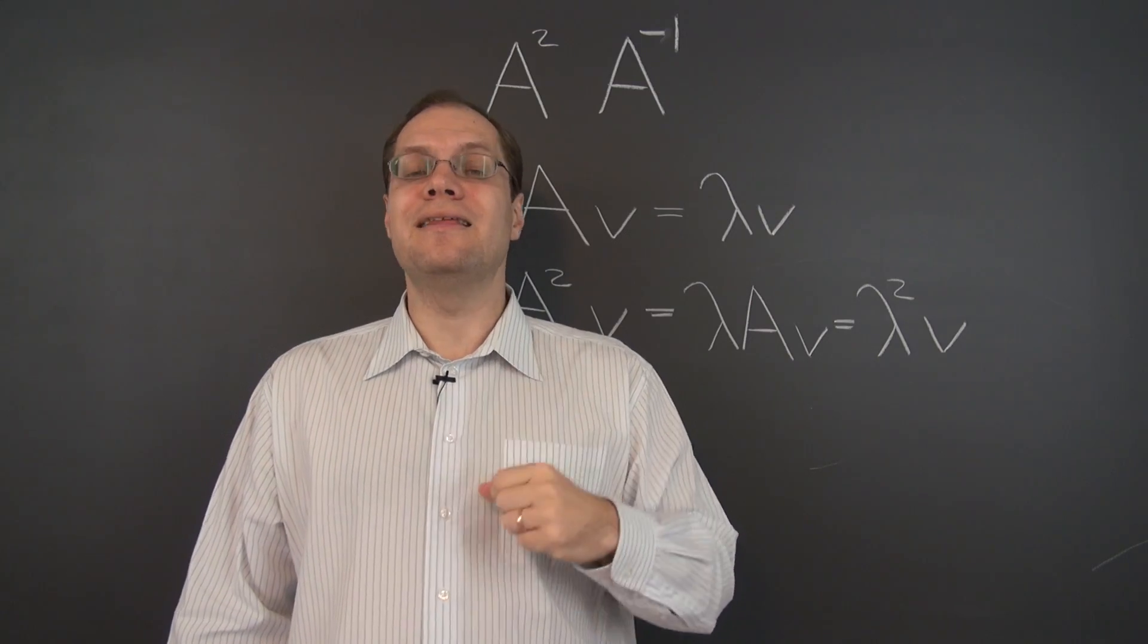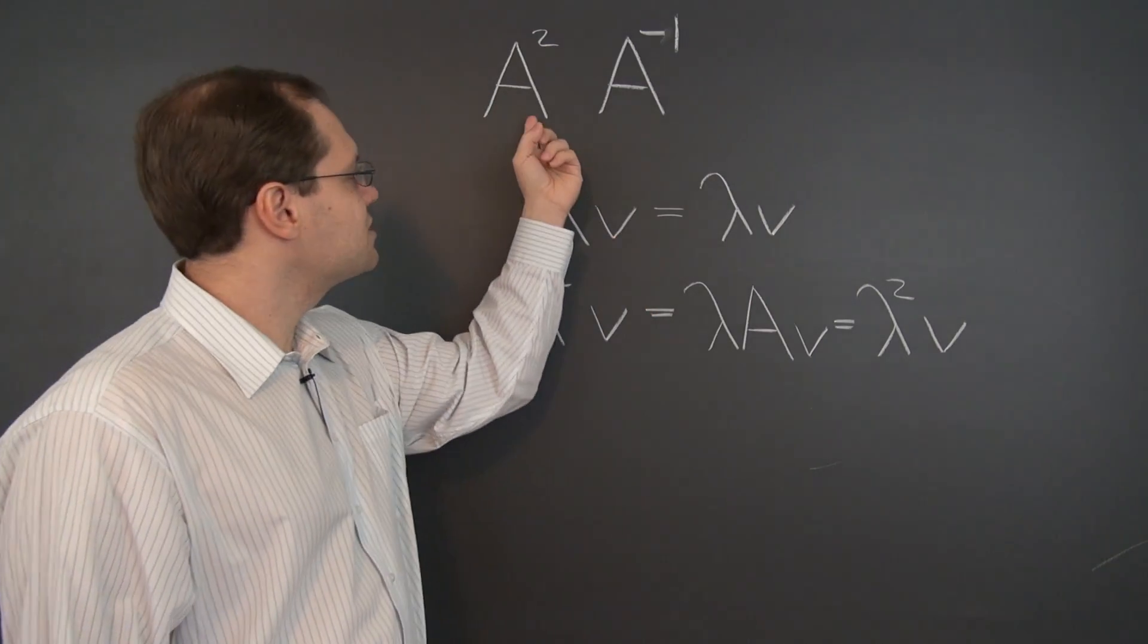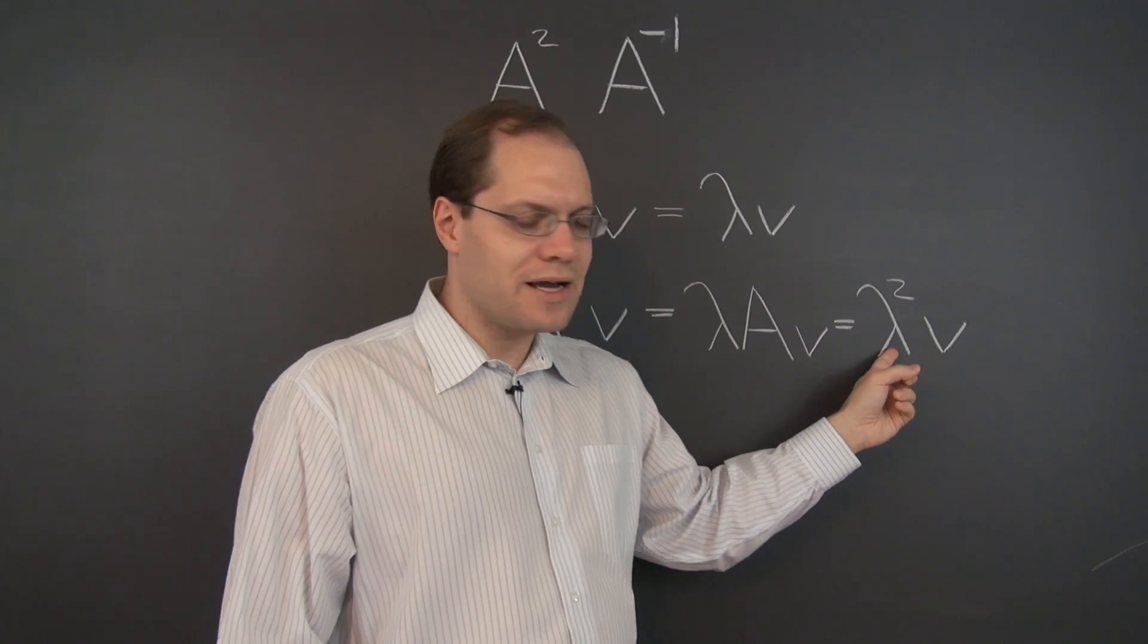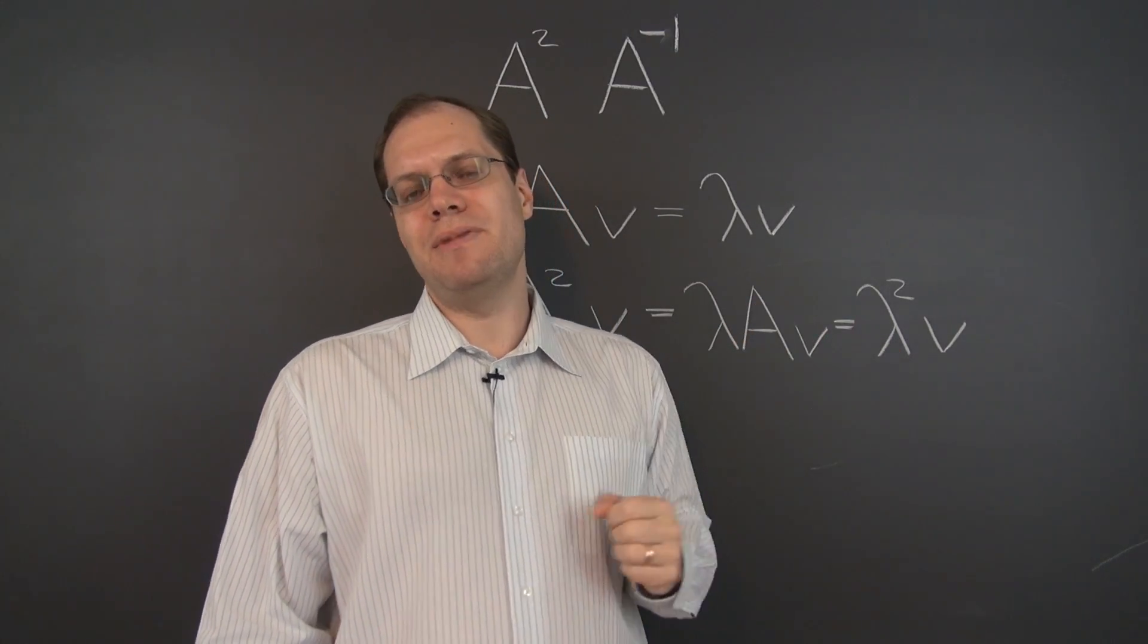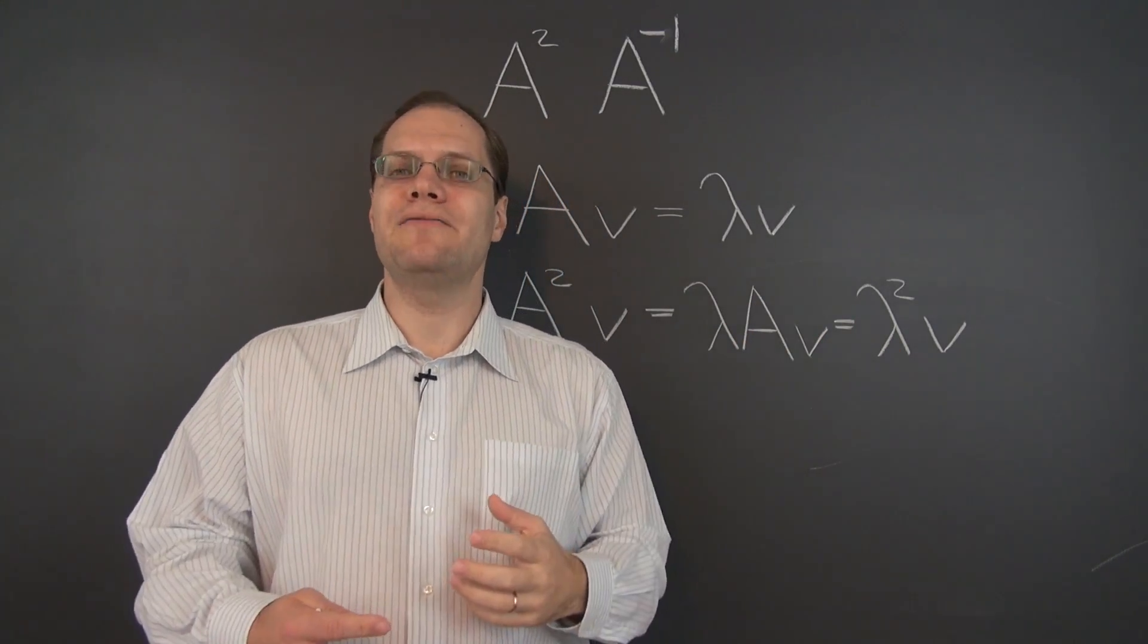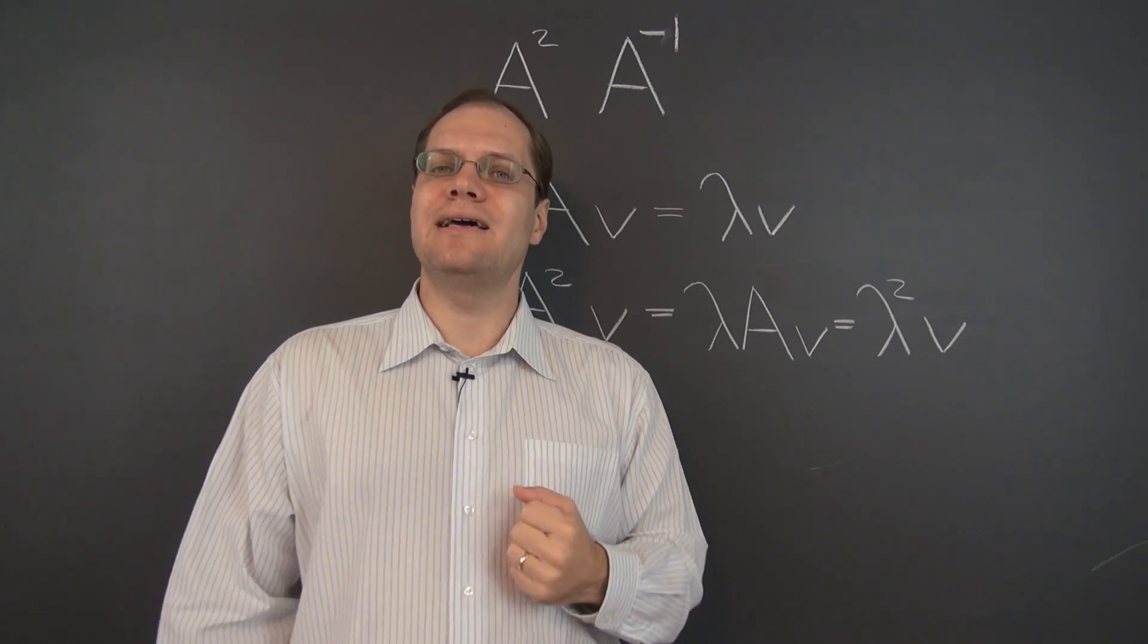that A and A squared have identical eigenvectors, and the eigenvalues of the matrix A squared are the squares of the eigenvalues of the matrix A. So same eigenvectors, related eigenvalues.